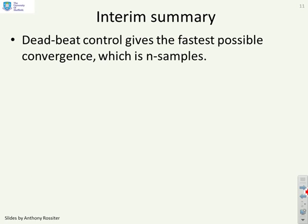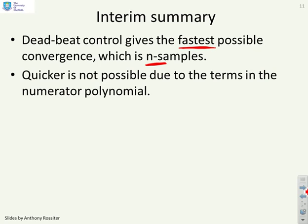So an interim summary. Deadbeat control gives the fastest possible convergence and the fastest possible is actually n samples where n is the system order. Quicker is not possible because the numerator polynomial will have n terms in general.